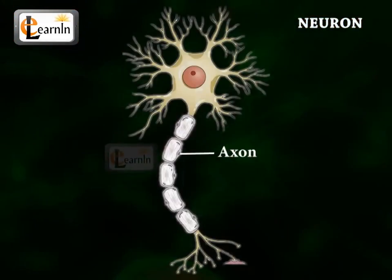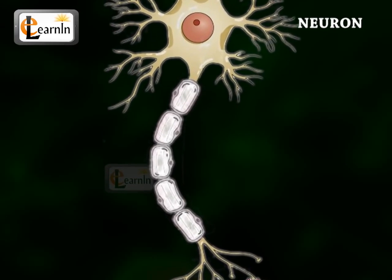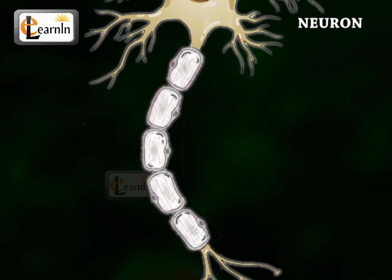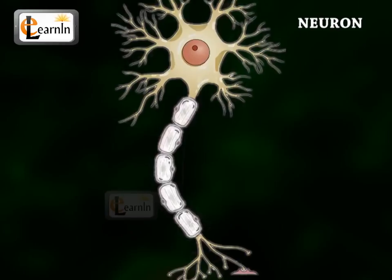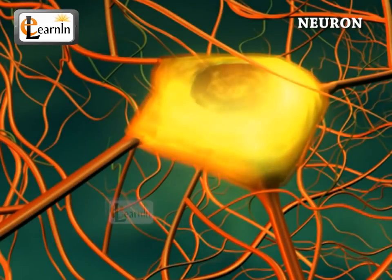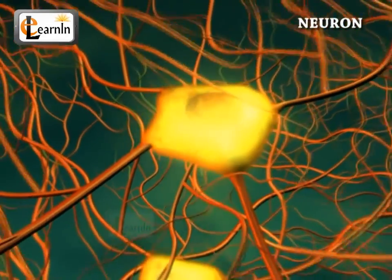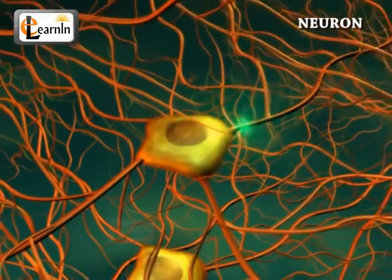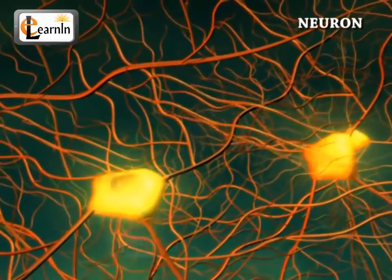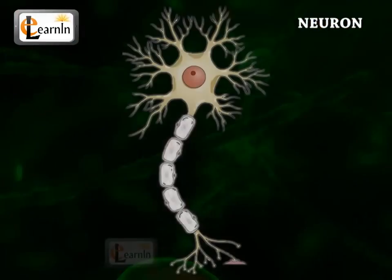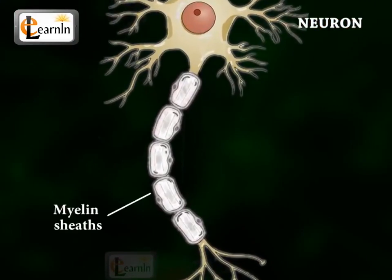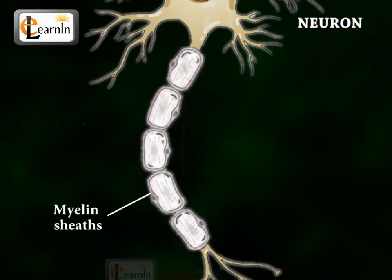There is only one axon that projects from each cell body, which is a fine cable-like projection. It is usually elongated and carries impulses away from the cell body, that is, away from the soma. It is called an efferent process. Many axons are surrounded by a segmented white fatty substance called myelin sheaths.